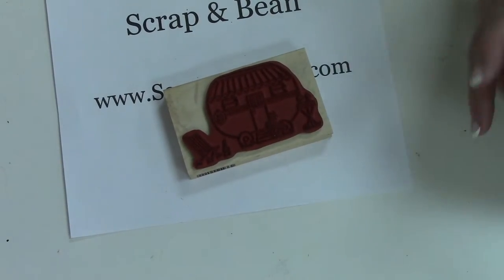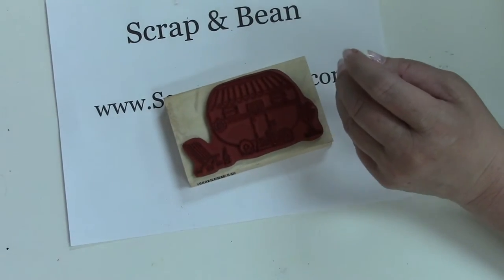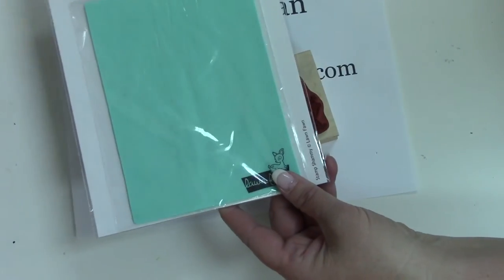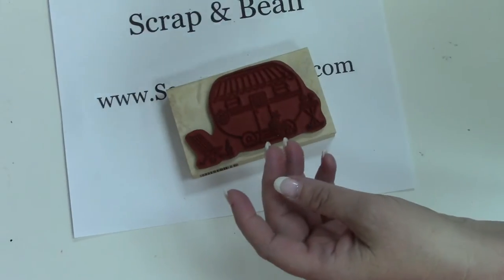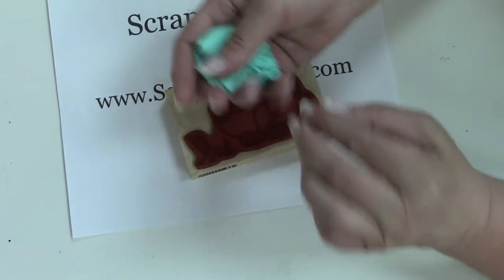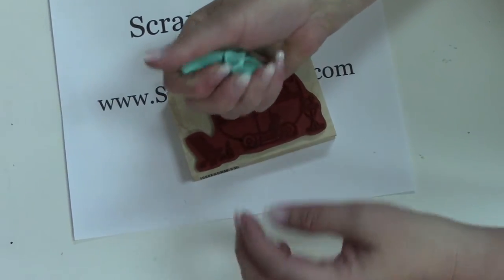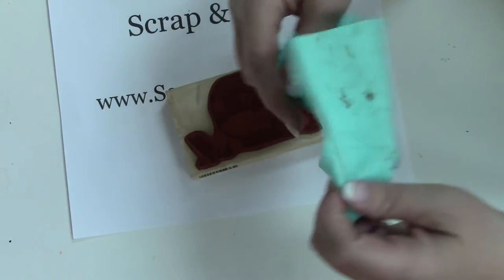So I have taken my chamois out of the package. This is what it looks like in the pack. I've taken it out of the package, I've run it under the sink, got tap water on it. Just wring it out. So now it's damp. It's not dripping but it is damp.